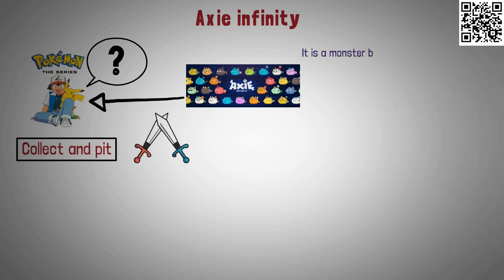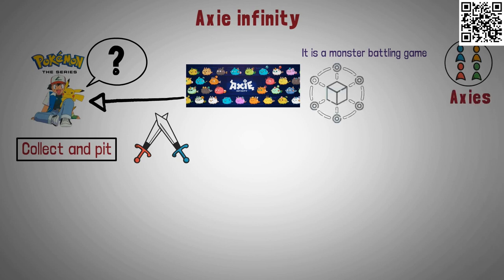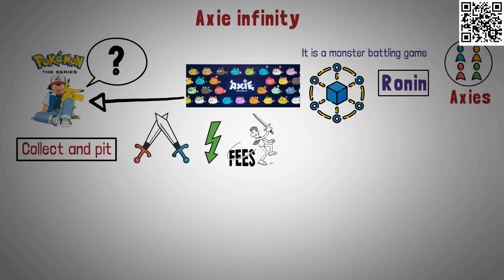Simply, it is a monster battling game where you pit teams of cute monsters called Axies. The game runs on the Ethereum blockchain, which is assisted by Ronin, which is a sidechain. The main purpose of including this sidechain is to minimize the fees and the delays in the transactions.